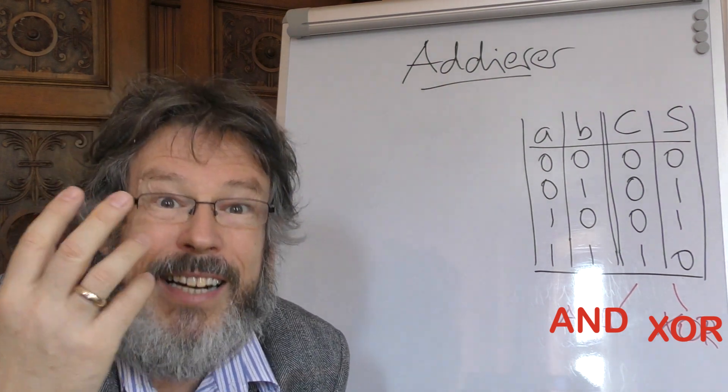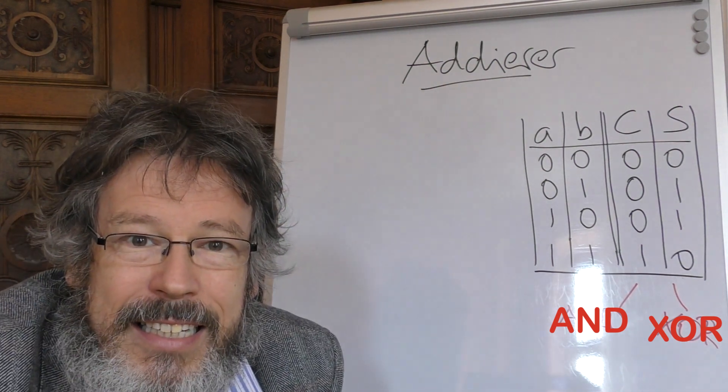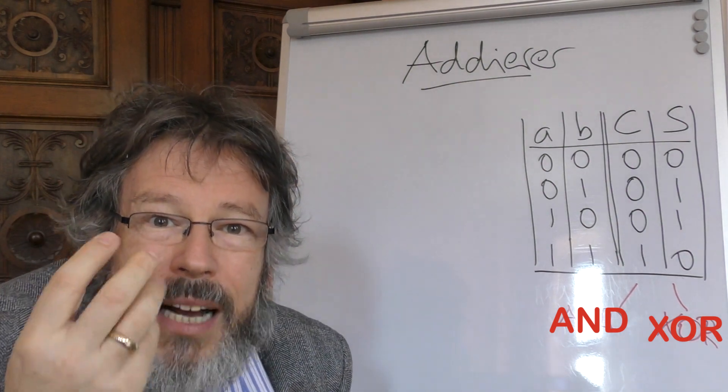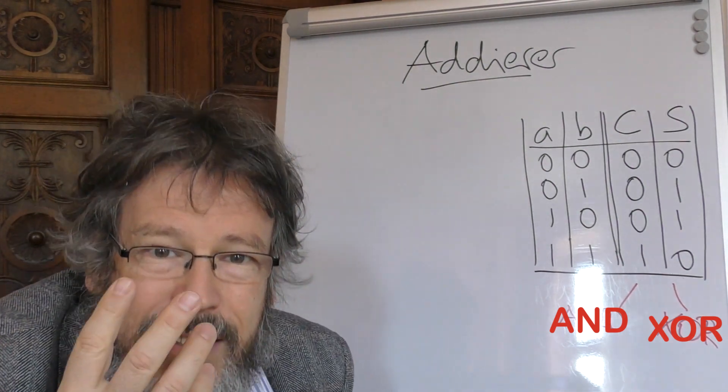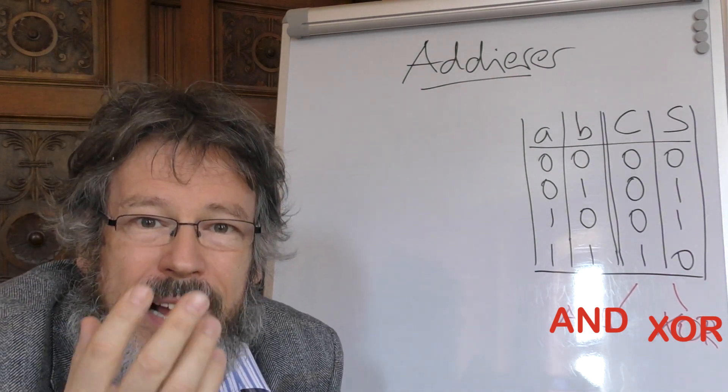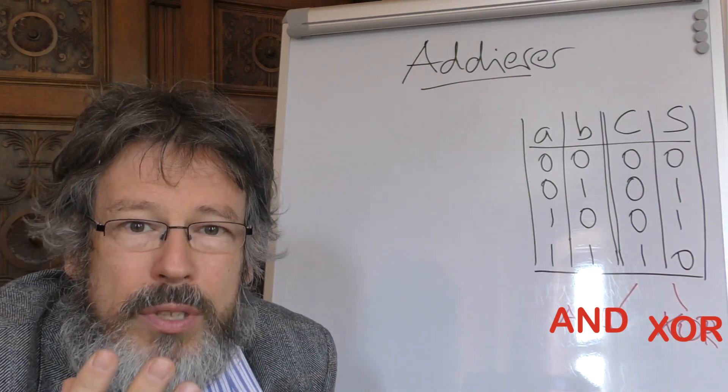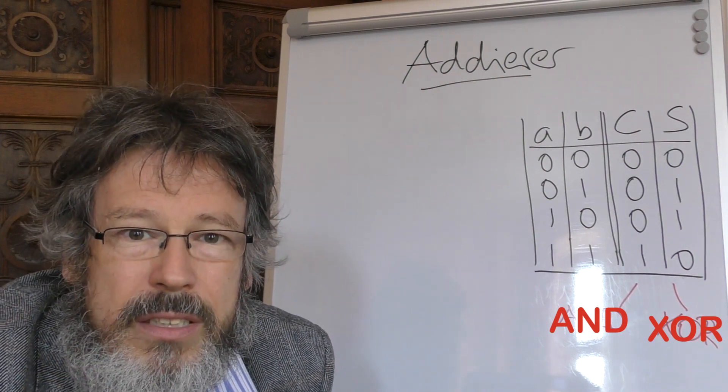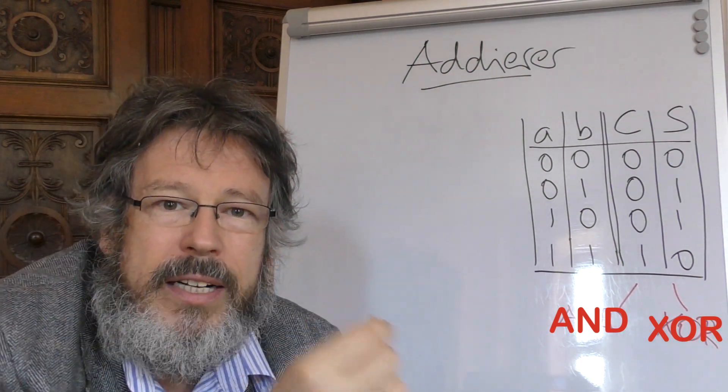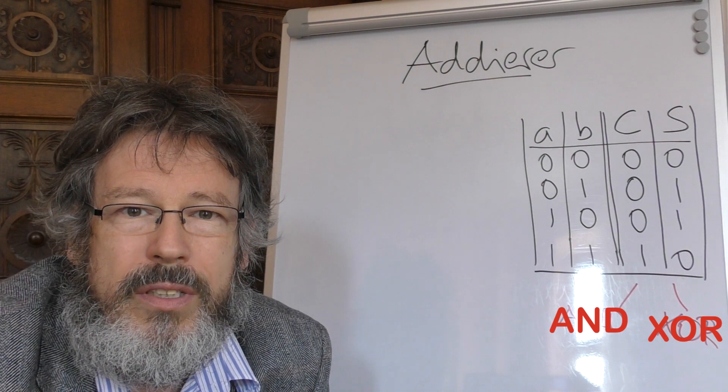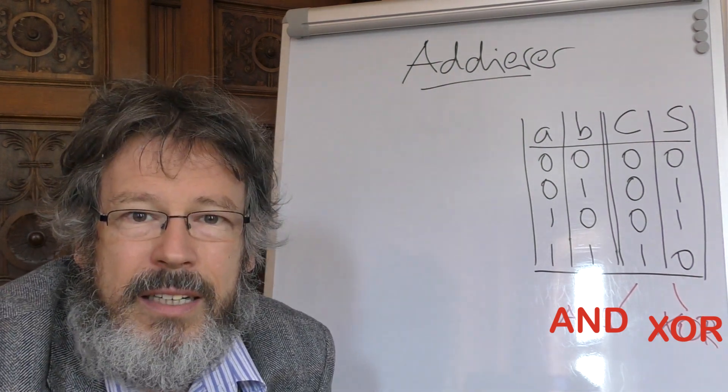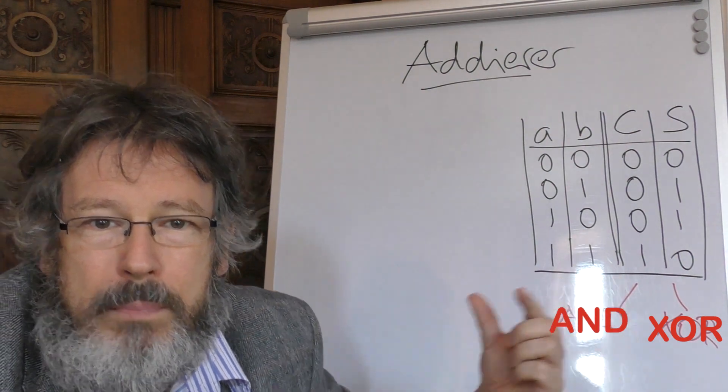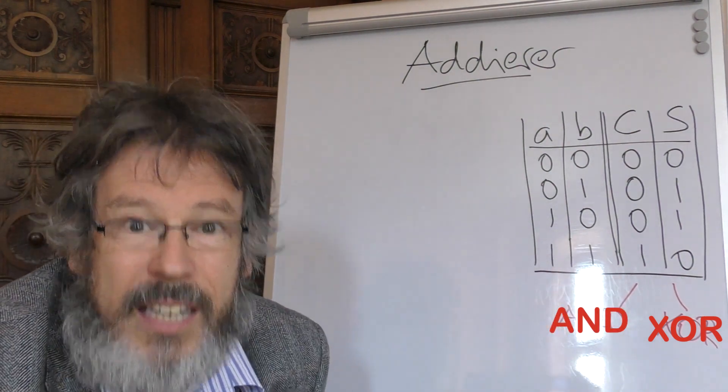An dieser Stelle treffen sich also plötzlich Logik und Arithmetik. Wir stellen fest, Rechnen ist eigentlich etwas, was wir mit Methoden der Aussagenlogik bewältigen können. Und das ist sehr fundamental, denn auf diese Weise können wir eine Infrastruktur, denselben Prozessor, im Endeffekt nutzen, um sowohl logische als auch arithmetische Operationen durchzuführen. Und darin liegt die Macht eines binären Rechners. Genau an diesem Punkt, wo sich Buhl'sche Algebra und Rechnen treffen.